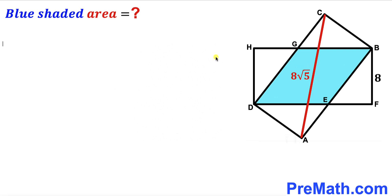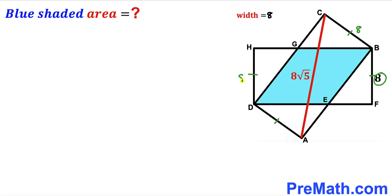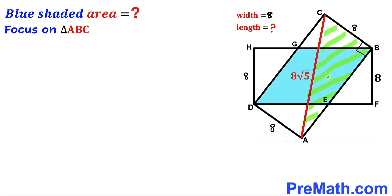Let's get started. Our very first step is to focus on the width of this rectangle. We know it is 8 units, and since the two rectangles are identical, all four corresponding side lengths are equal — each is 8 units. Our next task is to calculate the length of this rectangle.